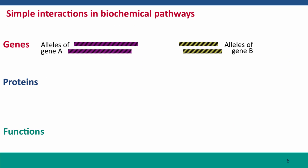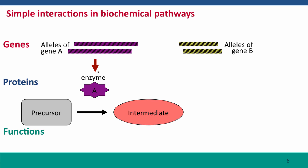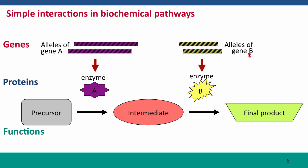Now we're going to think about this first in biochemical pathways, starting with a very simple two-gene pathway. We have two genes responsible for two biochemical steps. The first step takes a precursor — a small chemical molecule called a metabolite — and gene A produces enzyme A, which converts this precursor into an intermediate molecule. The intermediate then serves as the substrate for a second reaction catalyzed by the product of gene B, enzyme B, which produces the final product. What we want to think about is the consequences of mutations in these genes on the phenotype — specifically, is the product present or not?